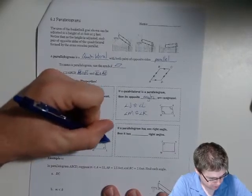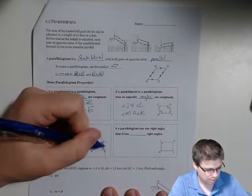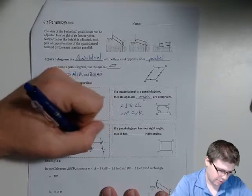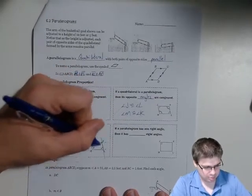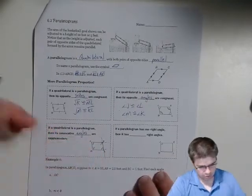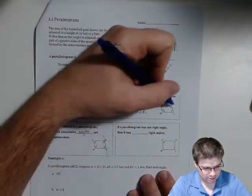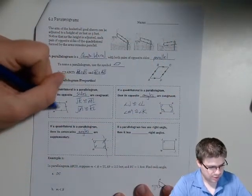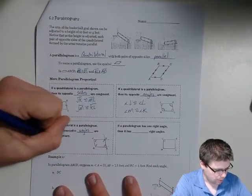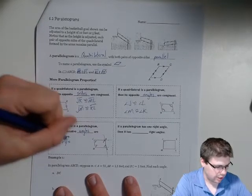With parallel lines cut by a transversal, we already know the same-side interior angles are supplementary. And then if they're supplementary to the same angle, we know those opposite angles are congruent. So here we have x plus y is going to equal 180 degrees.